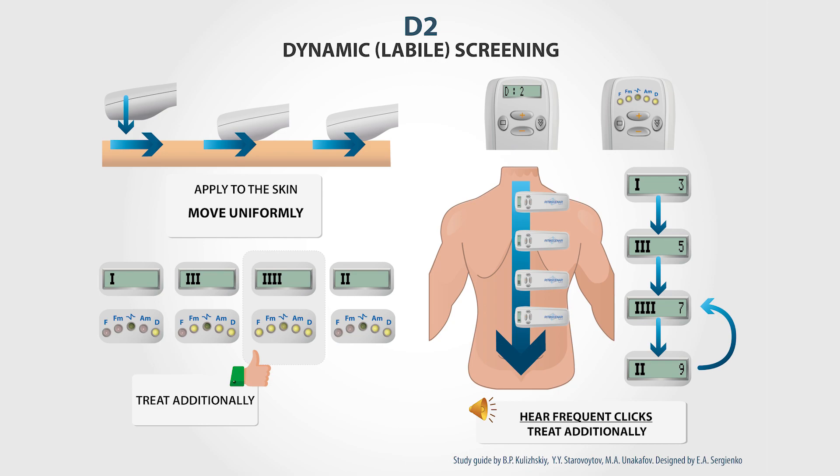In the Chance01 scanner M device, you need to look at the number of bars displayed on the screen. The more bars you see, the more optimal is this point for the treatment.